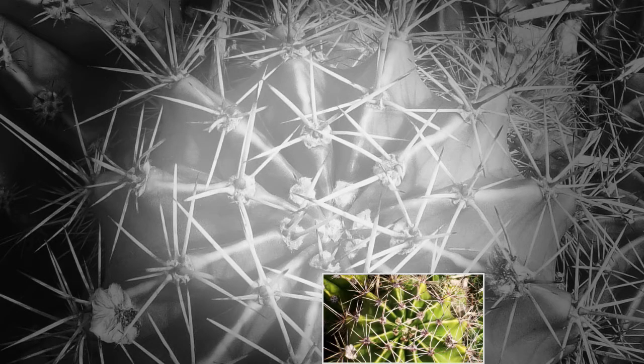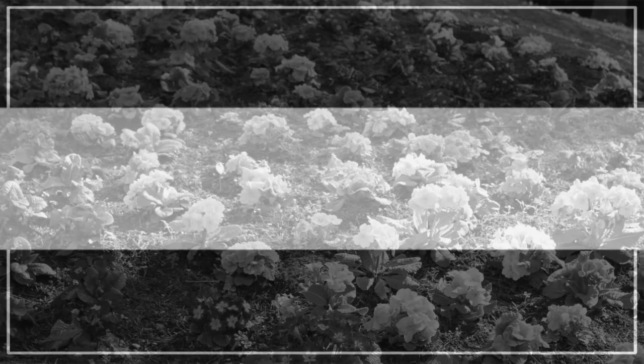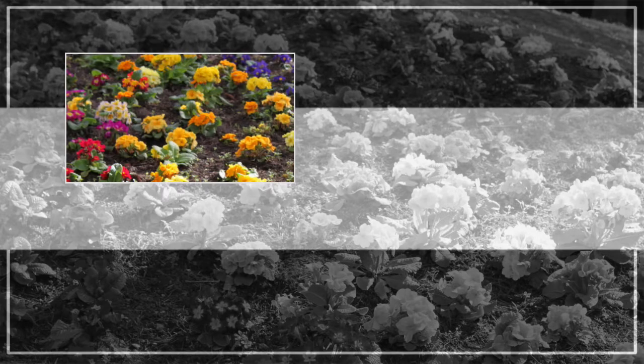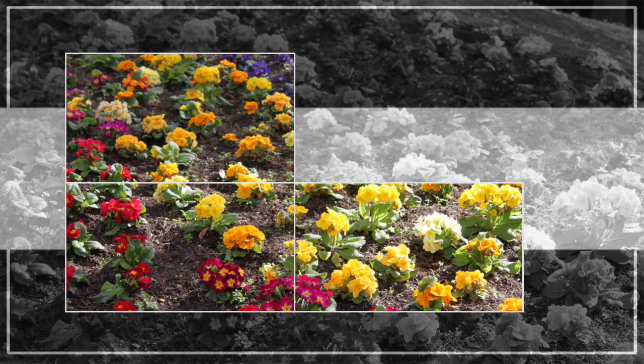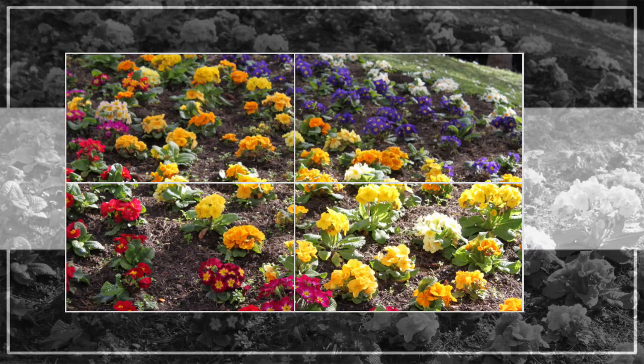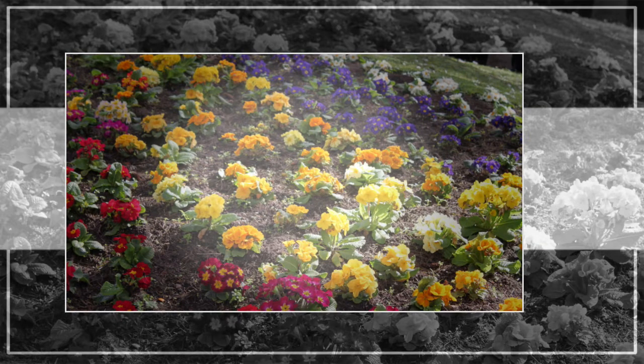Now what if we looked at the world in a new way, with no emotions or feelings? What if everything was rational and precise, all thought out and placed with perfect order? What if there were only clean lines, with no curves, and only certain colors? What if we saw the world more like math?